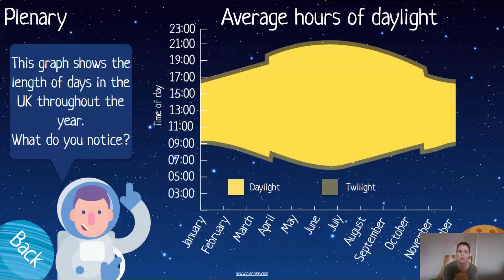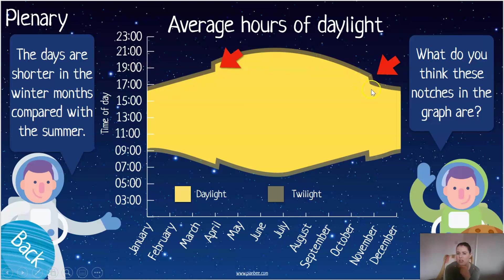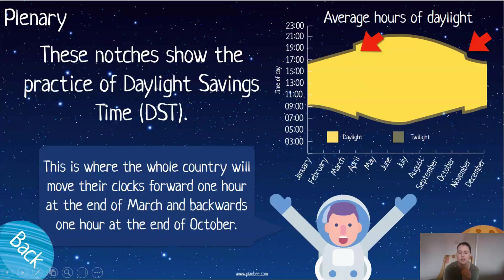Now let's look at this graph showing the length of days in the UK throughout the year. Pause the video — what do you notice about the average hours of daylight? The days get shorter in the winter months compared with the summer. Looking at the graph, daylight goes from around four to five o'clock, then shoots up to about half past six pushing seven, and then drops back down to about four o'clock. Do you notice any notches in the data?